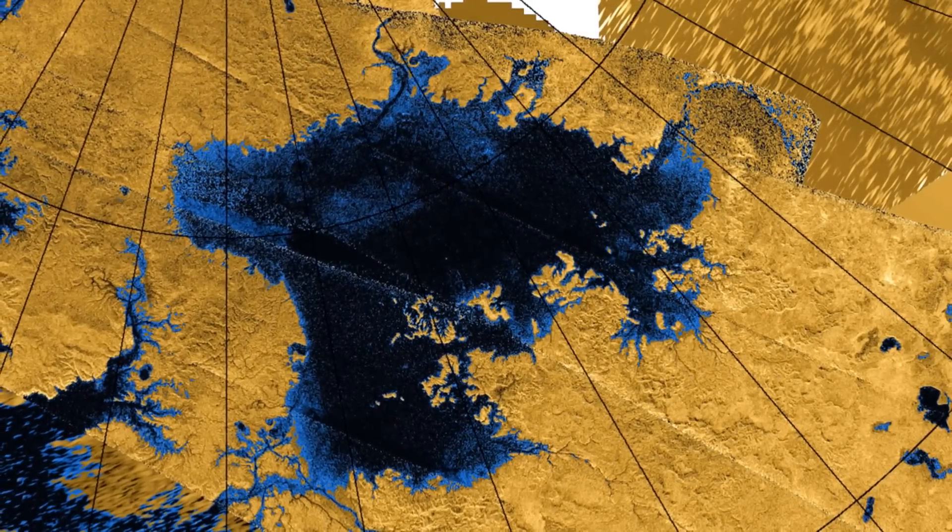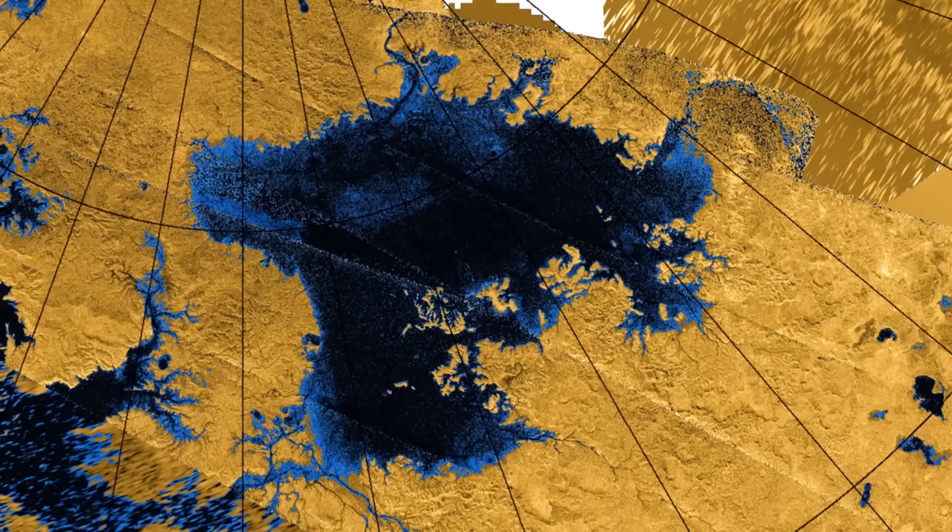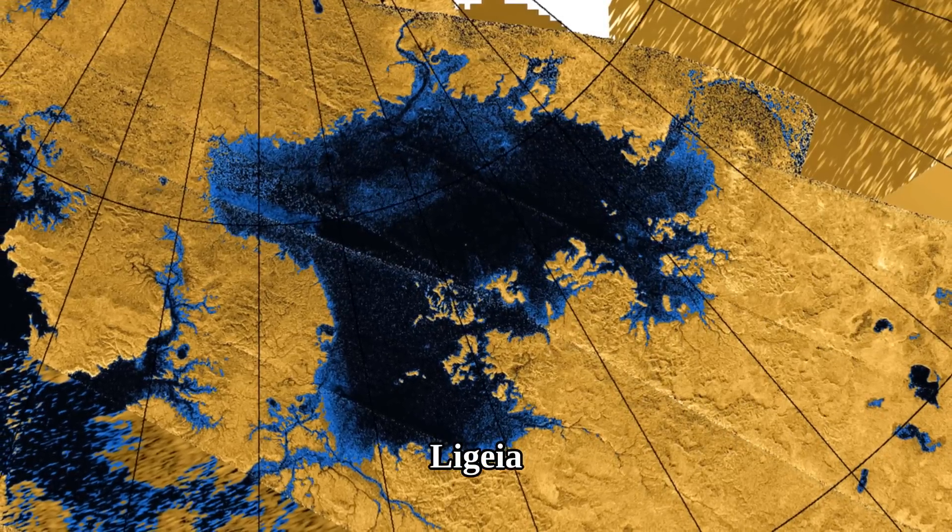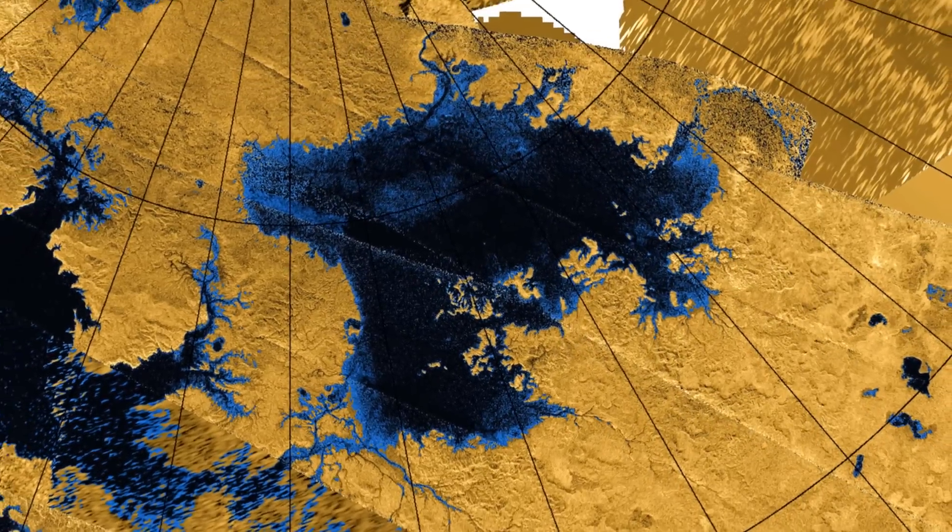This is an image of the second-largest hydrocarbon lake on Titan, called Ligeia, that is located at the North Pole of Titan.